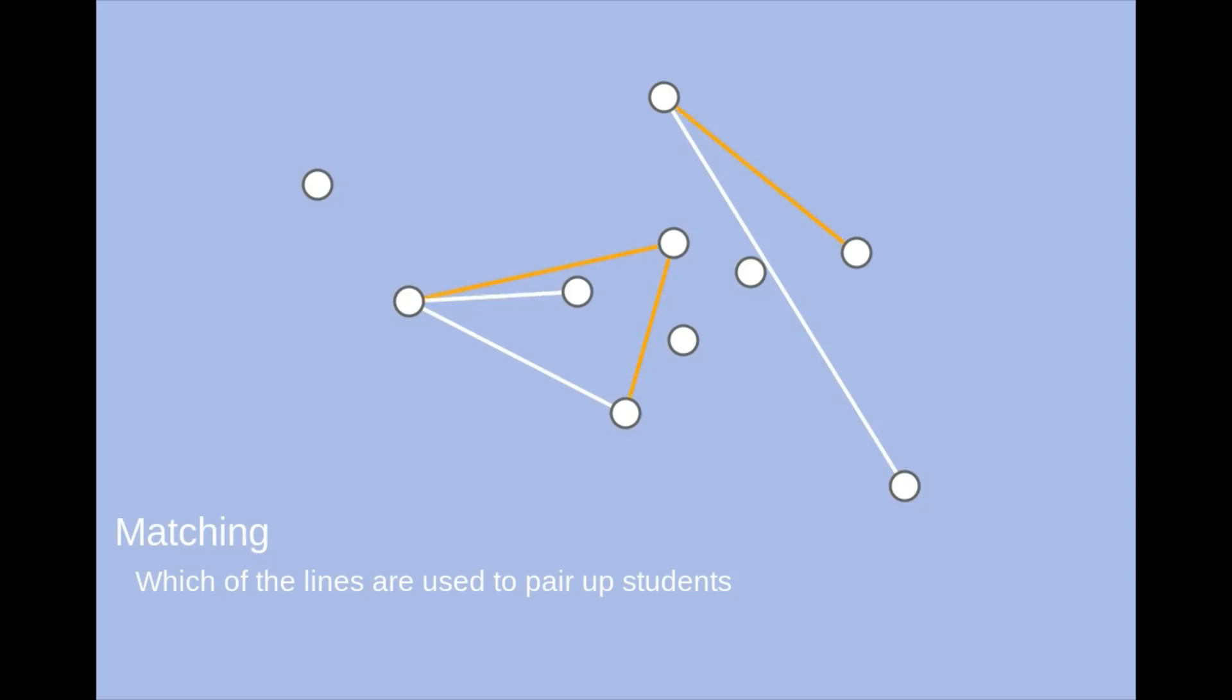But this isn't a matching, because this student is supposed to be in two pairs at once. And this isn't a matching either, because this pair of students don't work well together.